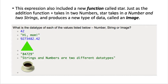And then the arguments are going to be how to do it. So just as the addition function, plus, takes in two numbers, star takes in a number and two strings, and produces a new type of data called an image.